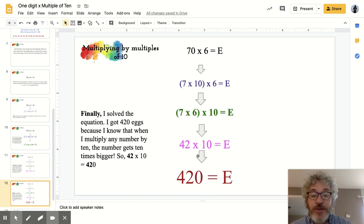In order to do that, I just moved over a place value or multiplied by 10. I solved my equation. I got 420 eggs because I know that when I multiply any number by 10, the number gets 10 times bigger. So 42 times 10 is 420.